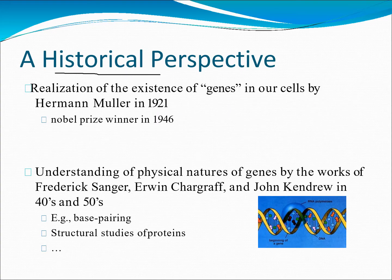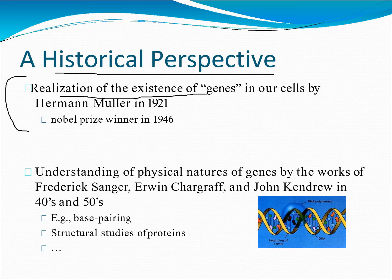Let's go through the historical perspective, which is a very important thing to understand for any topic. The first one would be the realization of the existence of the gene in our cells by Herman Mueller in 1921, for which he won a Nobel Prize in 1946.